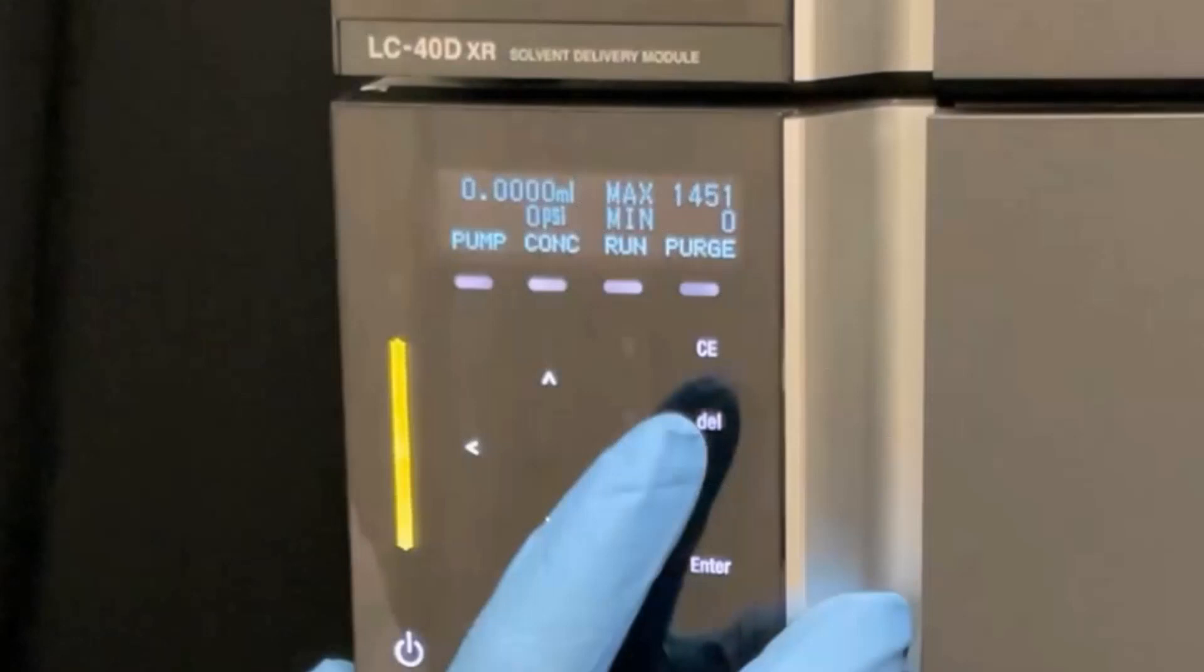First, set the plunger position using Pset. If you are not on the main screen on the display, you can navigate to it by pressing the CE button.